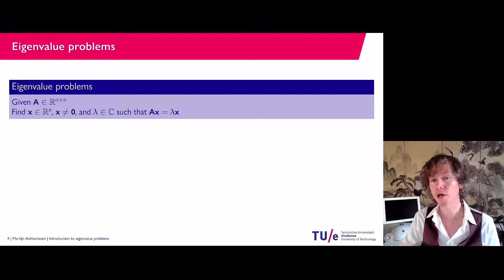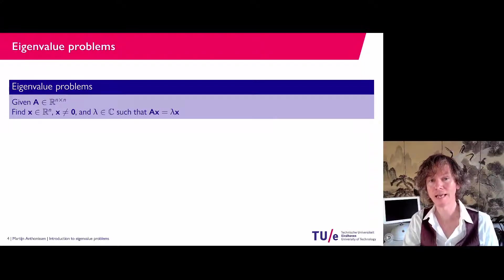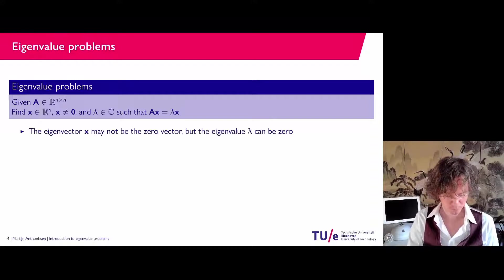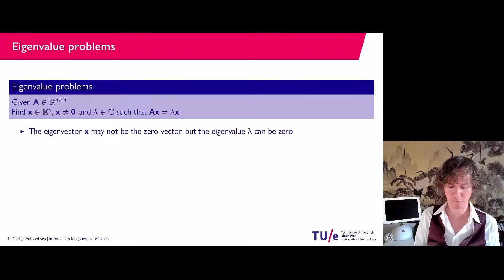If a matrix has eigenvalue zero, it doesn't have an inverse. It is a singular matrix. So the eigenvector may not be the zero vector, but the eigenvalue λ can be zero.